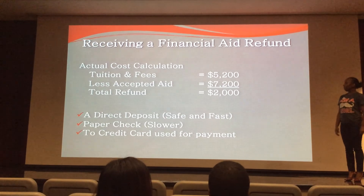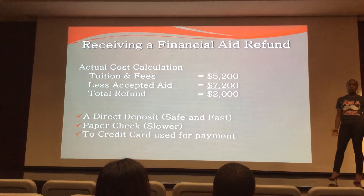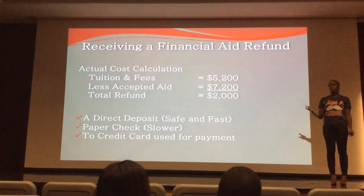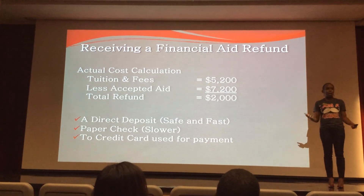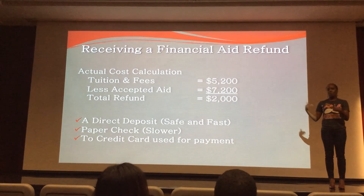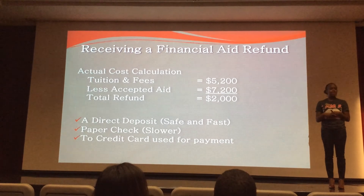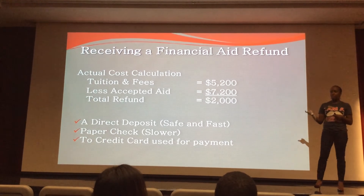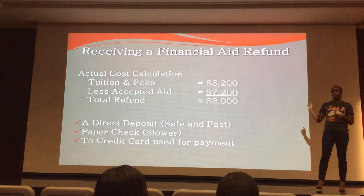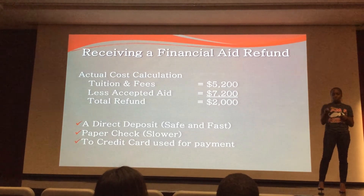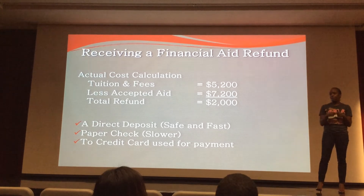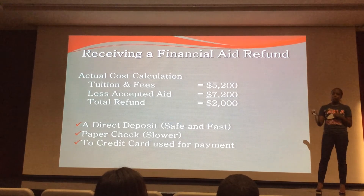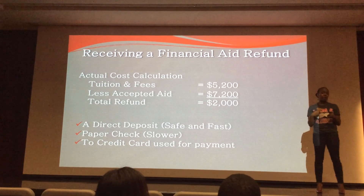For example, if a student's tuition and fees are $5,200 and their financial aid is $7,200, they have a $2,000 refund. Most students use those refunds for books, a new laptop, or everyday expenses. That money goes back to the student — the only exception is if the refund comes from a parent PLUS loan, in which case you as the parent can opt to have the money go directly to your student or directly to you.